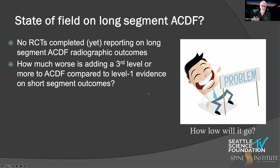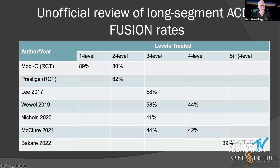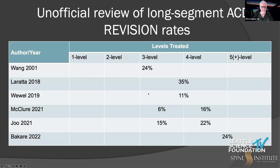You have to ask: how much worse is adding a third level to an ACDF? It's quite a bit when you look at the data. There are a large number of retrospective studies. We did a literature review — we ought to write it up — but when you look at one and two levels the fusion rates are high. The other question is how many are symptomatic, but obviously the higher the number of non-unions, the more symptomatic patients there will be. As you go to three or four levels, you start approaching fusion rates that fall below 50 percent. Multiple studies have shown this, and the worst is Baker in 2022.